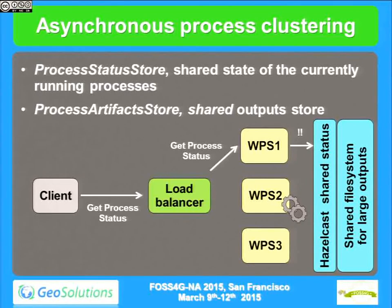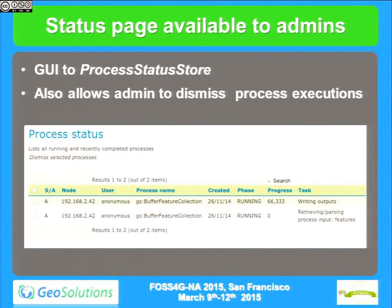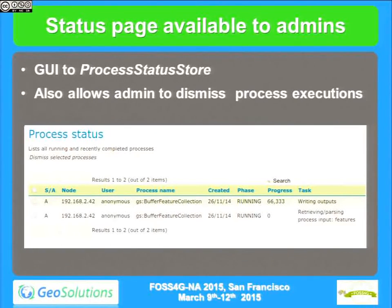On top of the ProcessStatusStore, we built a little GUI for administrators so that from the admin panel you can see which processes are running, their names, when they were created, and so on. And as an addition we didn't have before, you can select a running process and cancel it. If you see a process that's been running for hours and you think it's just chewing processing power for nothing, as an administrator you can go and kill it.